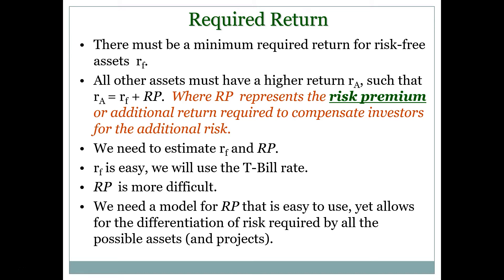Given that the risk and return trade off one for one, any asset with non-zero risk must have an expected return estimated by adding some premium for the risk we bear. That risk premium is completely dependent on the level of risk those assets have. A company like Google, with high exposure to systematic risk, should have a higher risk premium and thus a higher expected return than a company like Coca-Cola, which has lower beta and a smaller risk premium. If I can find a relationship that defines the risk premium, I can add it to the risk-free rate and get the expected return on any asset.